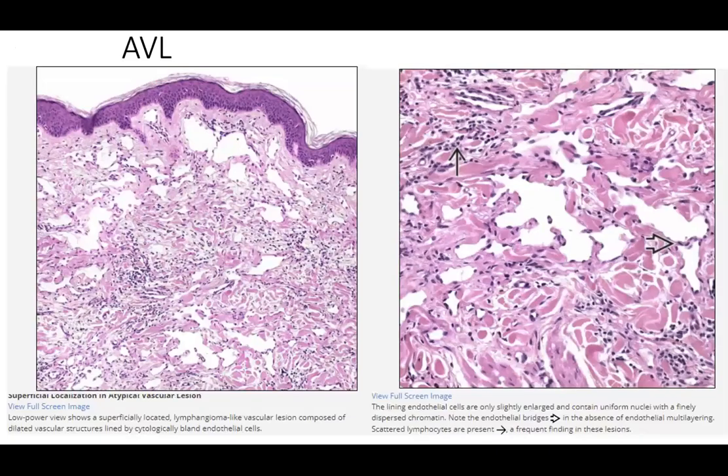More examples show the superficial location of the atypical vascular lesion and cytologically bland endothelial cells — lined by a single layer of endothelial cells that lack significant nuclear atypia.